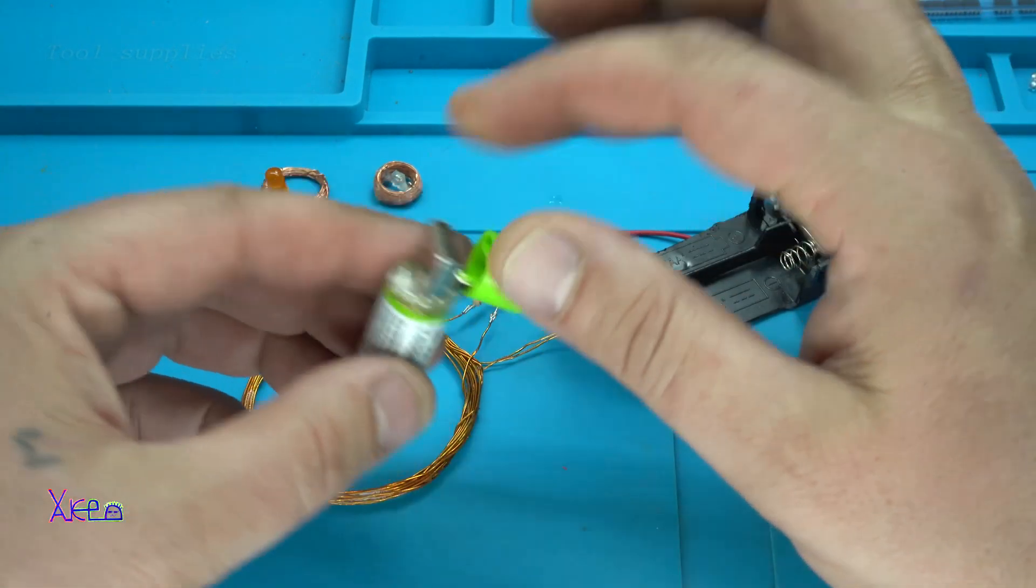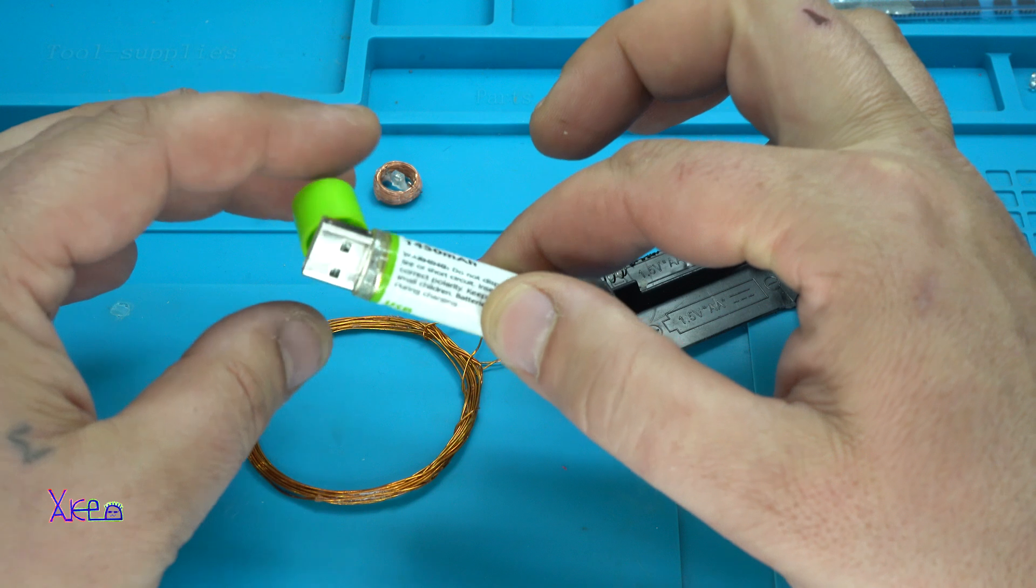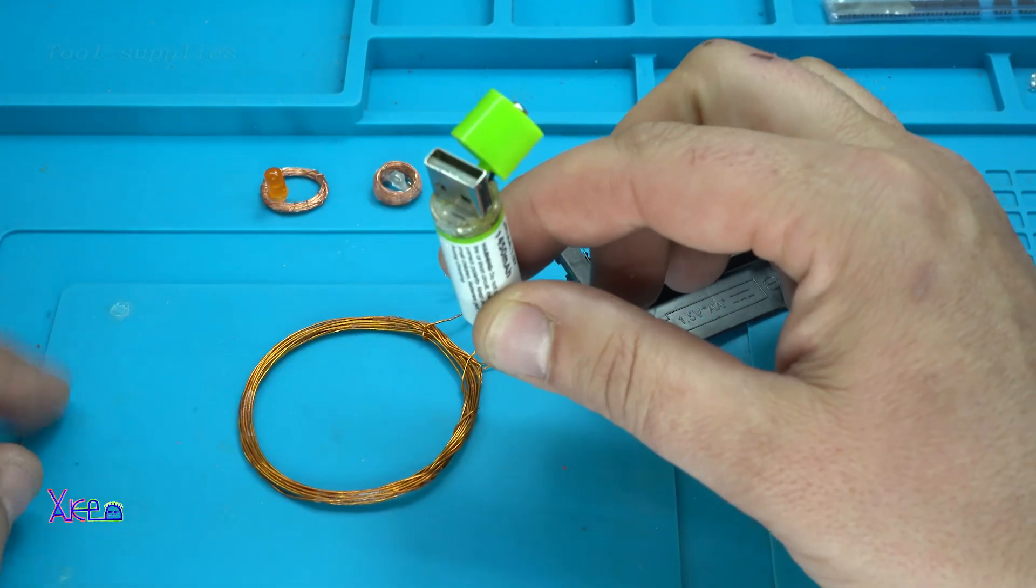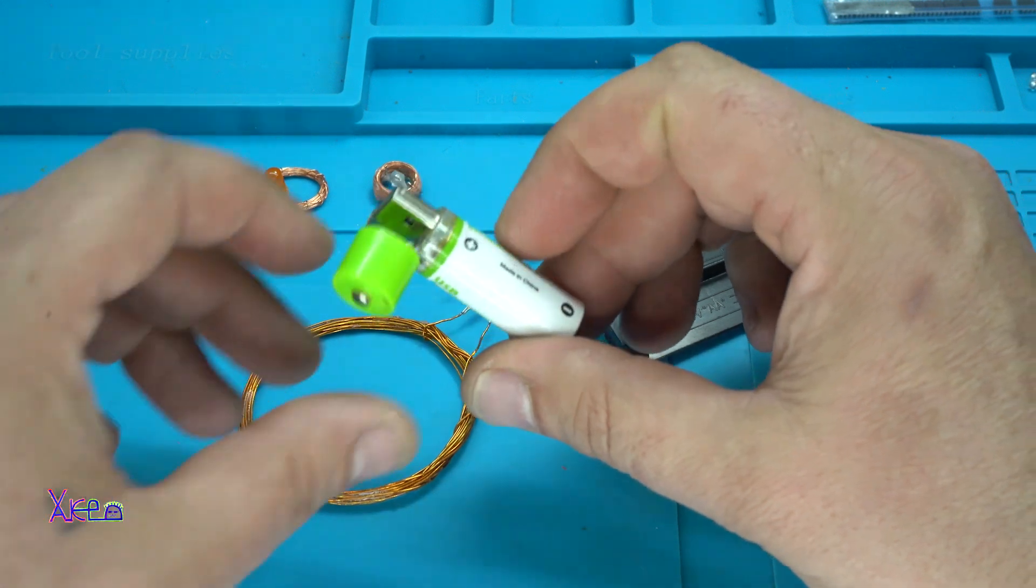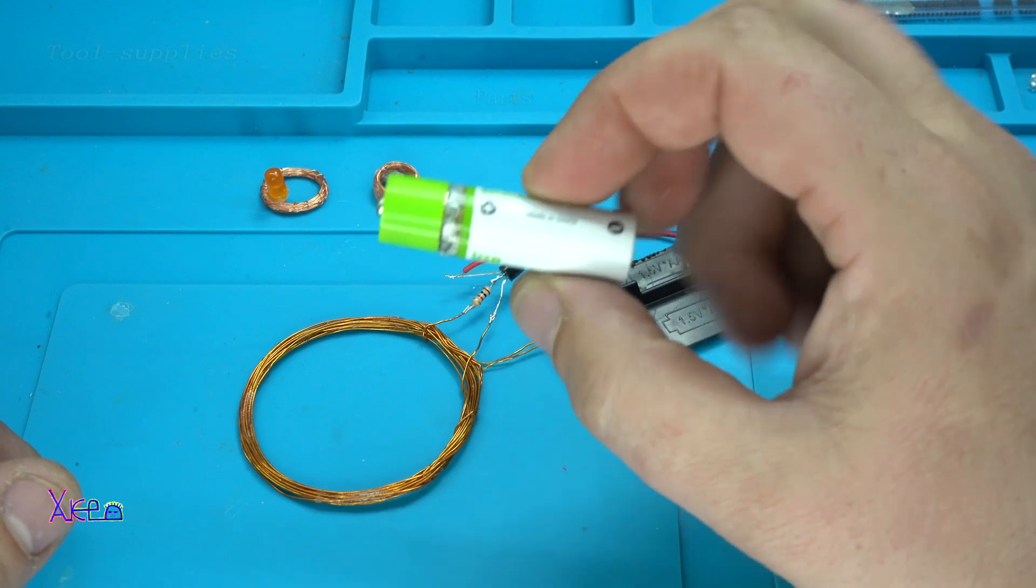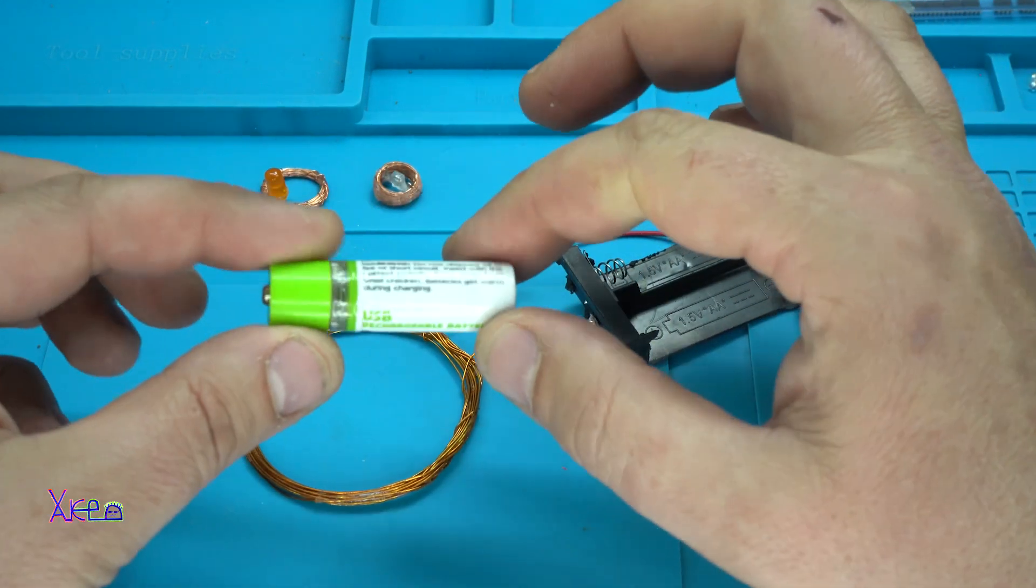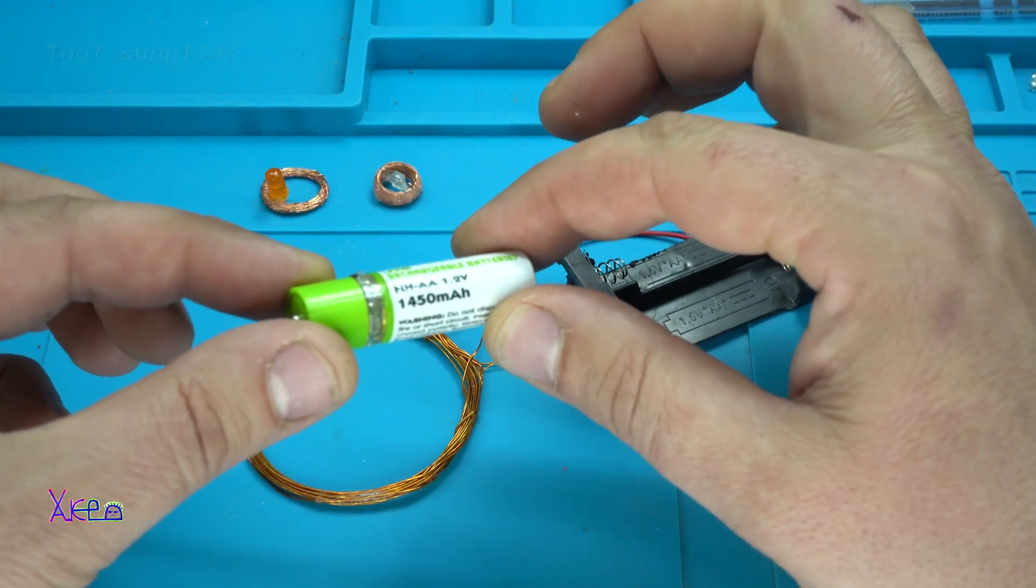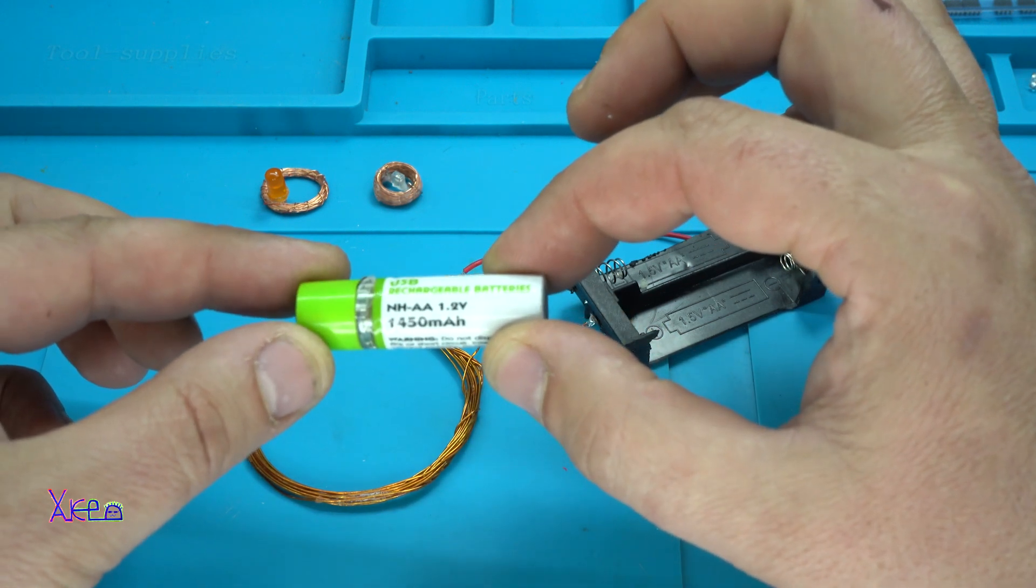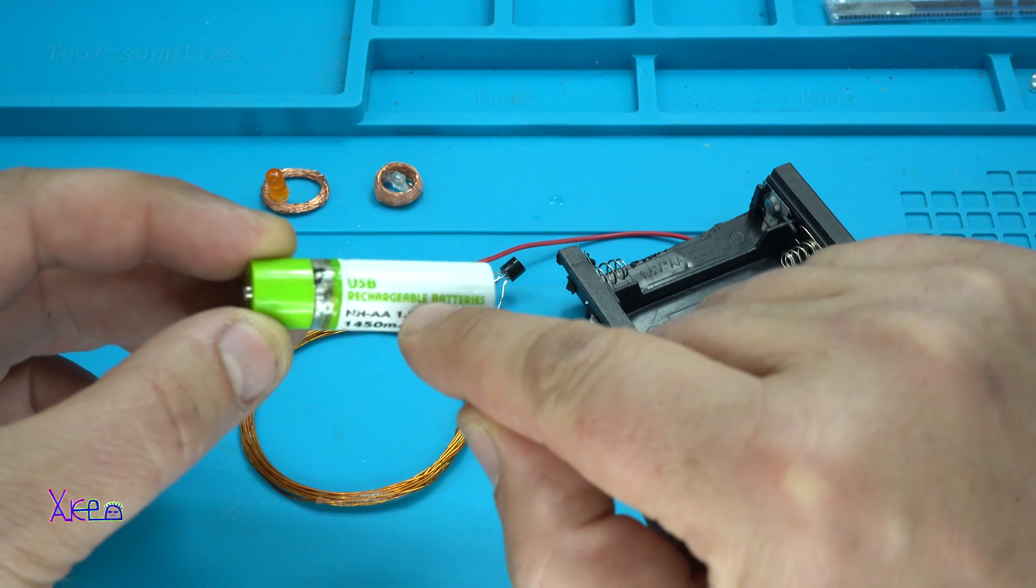First of all, let's be clear about this gadget which is USB rechargeable AA battery. Very cool product. This one says that it has 450 milliamps at 1.2 volts USB rechargeable batteries.